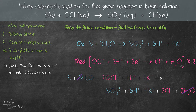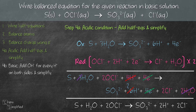For H⁺: we have 4 H⁺ on the left and 6 H⁺ on the right, so after simplifying we end up with 2 H⁺ on the right. The 4 electrons on both sides cancel out. If you have a different number of electrons that don't cancel out, that means something went wrong — stop, backtrack, and check your work. After simplifying, we get: S + H₂O + 2 OCl⁻ → SO₃²⁻ + 2 H⁺ + 2 Cl⁻. That is the balanced equation in acidic condition.